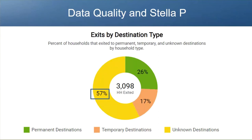Stella P does more than analyze your data. It is a communication tool you can use to support a data quality culture and get stakeholder buy-in to improve data quality. Stella P really makes system performance data accessible and helps ground data quality improvement in a higher purpose: understanding system performance to improve your system and reduce homelessness. Stella is not a magic bullet to solve all of your data quality problems, but it gets you on the right path. It makes data completeness issues visible so you can see the impact on your system.